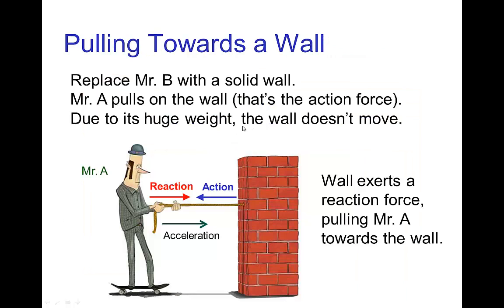If we consider yet another situation where we replace Mr. B with a solid wall that can't move, then when Mr. A pulls on the rope — that's the action. But since the wall is massive, it is not moving any significant amount, and Mr. A will accelerate towards the wall. So the force that actually moves Mr. A is the reaction force from the wall transmitted through the rope, which is the result of the action of him pulling on the wall.